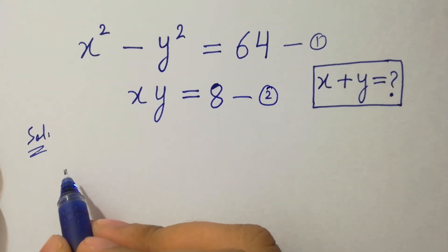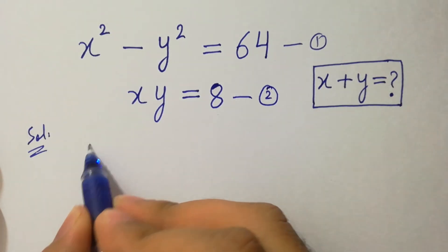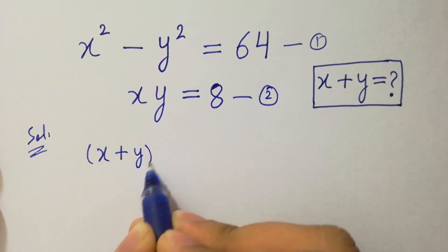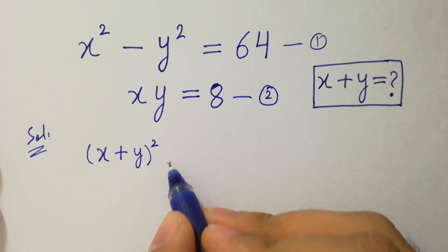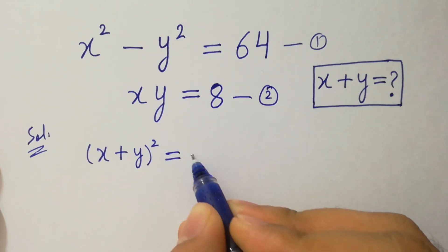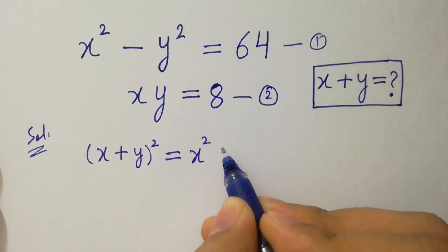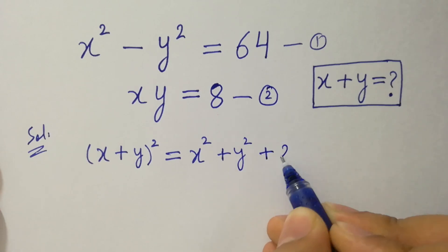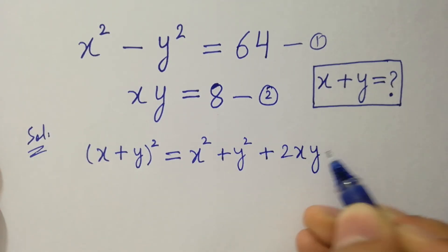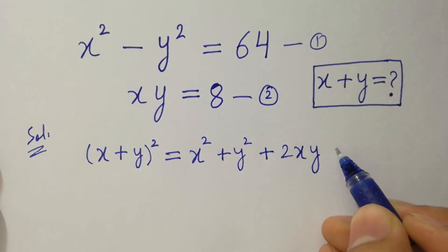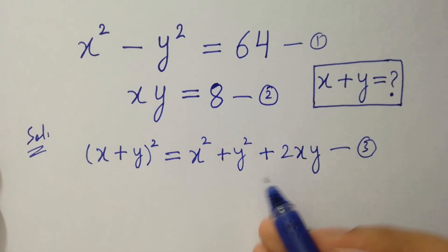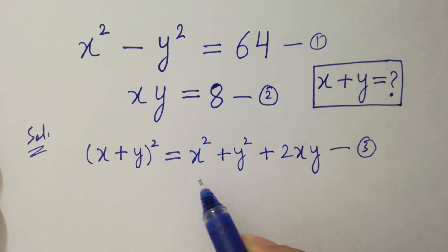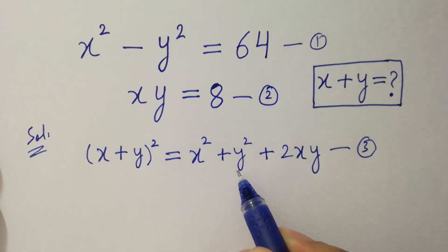We know the formula of x plus y whole squared, which is equal to x squared plus y squared plus 2xy. Let's say this is the third equation. Here we have the value of xy which is 8, but we need the value of x squared plus y squared.